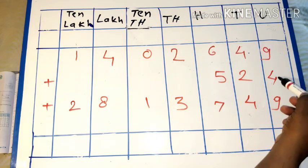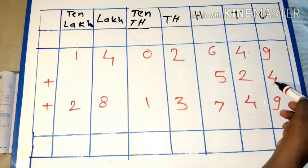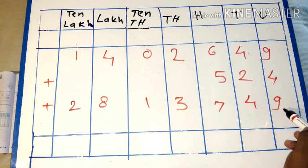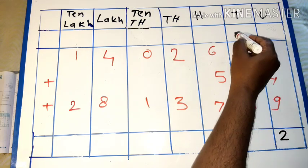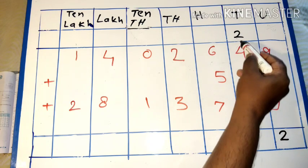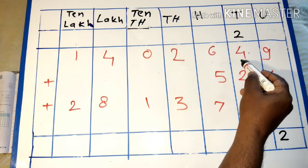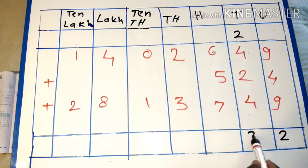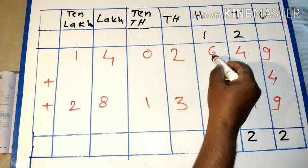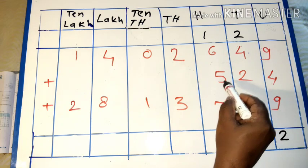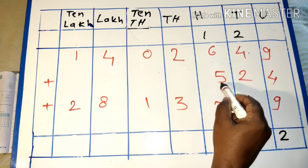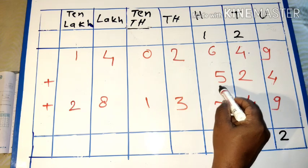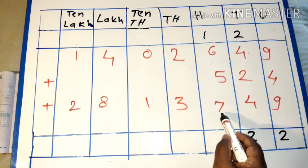Now, nine plus four plus nine. Nine plus four equals thirteen. Thirteen plus nine equals twenty-two. Two plus four equals six. Six plus two equals eight. Eight plus four equals twelve. One plus six equals seven. Seven plus five equals twelve. Twelve plus seven equals fifteen, nineteen.